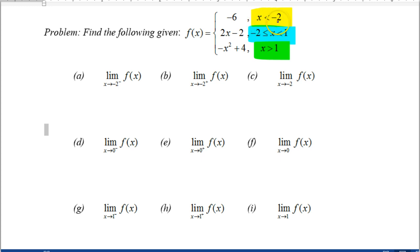So when I read x is less than -2 I'm thinking left of -2. When I'm reading -2 to 1 I'm thinking right of -2 and the left of 1. And when I see x is greater than 1 I'm thinking to the right of 1. That's going to help me when I do my one-sided limits.